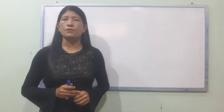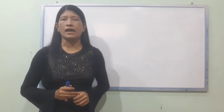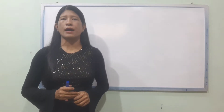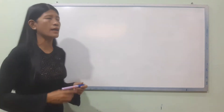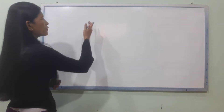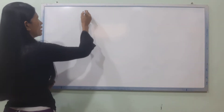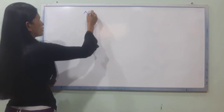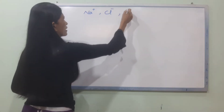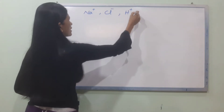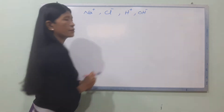H2O dissociates into H+ and OH- ions. NaCl dissociates into Na+ and Cl- ions. The electrolyte is a transport of sodium chloride, and the pressure uses sodium chloride.